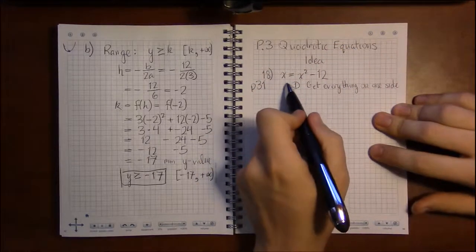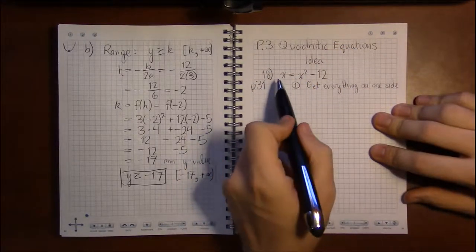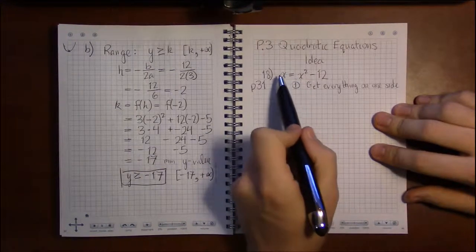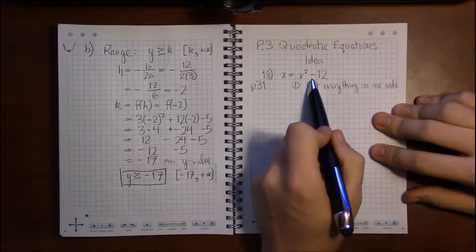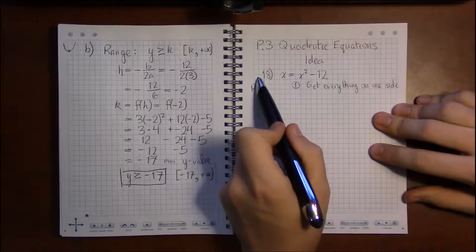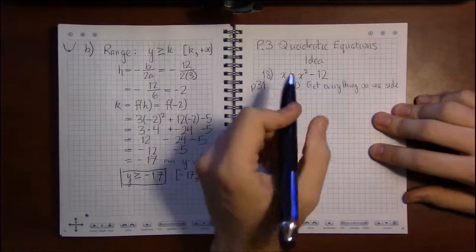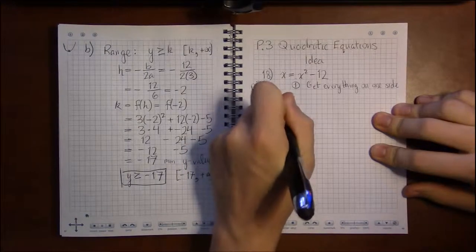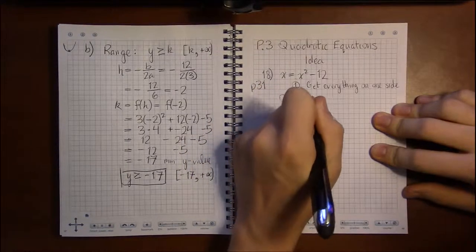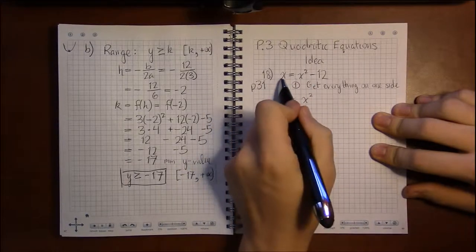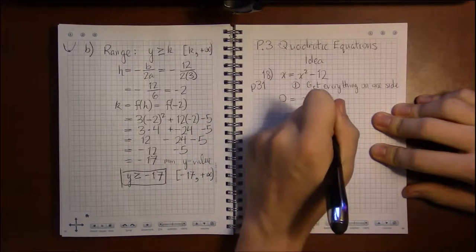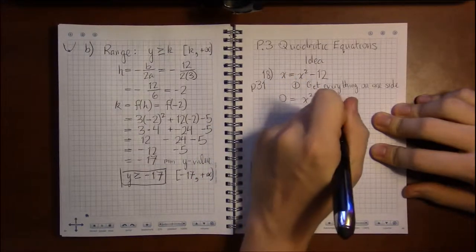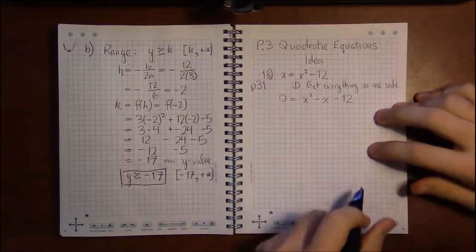So in this case, I prefer a positive leading coefficient, so I'm going to subtract x from both sides. You could also subtract x squared and then add 12 to move everything to the left, but I'm going to move everything to the right. So I'm going to subtract x from both sides, and writing this in standard form, the x squared comes first, then the minus x, and then the minus 12.